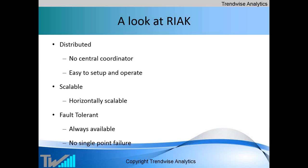We will take Riak as an example of this type of database and look at it in a little bit more detail. The data is stored at primarily two levels. A few points about Riak: it is a distributed database, and the good point is that it doesn't have a central coordinator, which means there is no single point of failure.